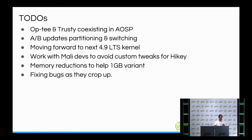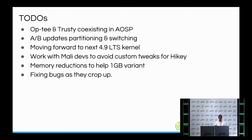Still a bunch of to-dos: we want to get Opti fully enabled as well as help Google get Trusty running on HiKey, so that both Opti and Trusty can coexist and allow people to compare and contrast the different implementations. I also want to see AB updates and partition switching added — this requires enablement across both the kernel and the bootloader. We need to move forward to the 4.9 kernel, work with the Mali developers to avoid needing custom tweaks, and try to get LMG's memory reduction efforts upstream into AOSP for HiKey's 1GB variant.